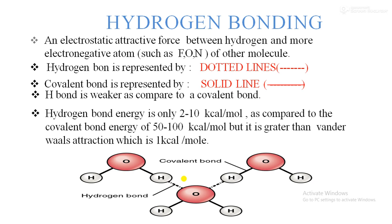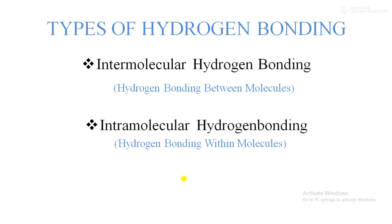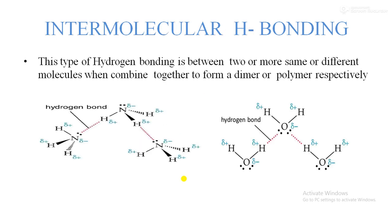Hydrogen bonding is stronger than van der Waals attraction, which is about one kilocalorie per mole. Types of hydrogen bonding: there are two types — intermolecular hydrogen bonding, which occurs between the same or different molecules, and intramolecular hydrogen bonding, which occurs within the same molecule.